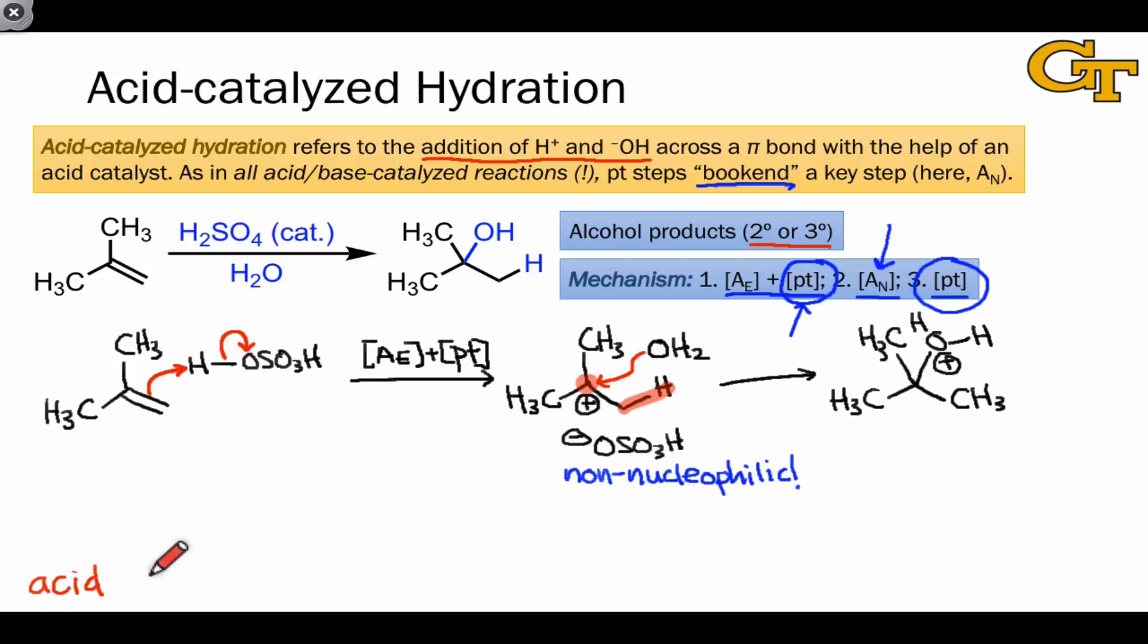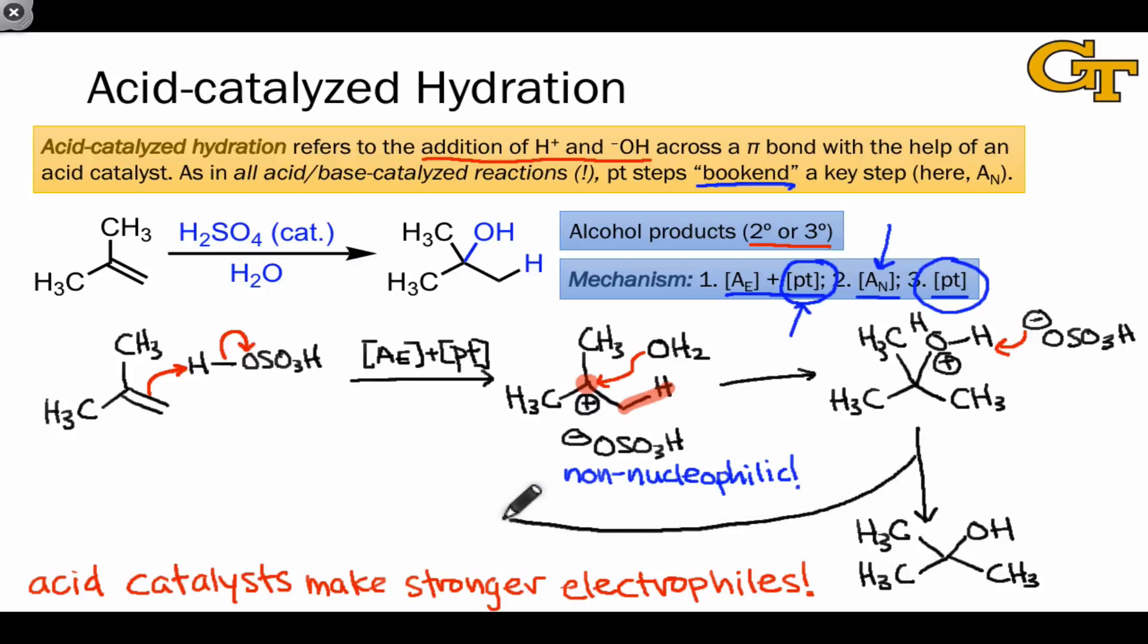This is how acid catalysts work. Through proton transfer, they transform weak electrophiles, such as an alkene, into strong electrophiles, such as a carbocation. At this point, regeneration of the catalyst is just a matter of transferring a proton back to the bisulfate anion. Notice that this step gives rise to the neutral alcohol product here, and regenerates sulfuric acid so that it can participate again in the mechanism.